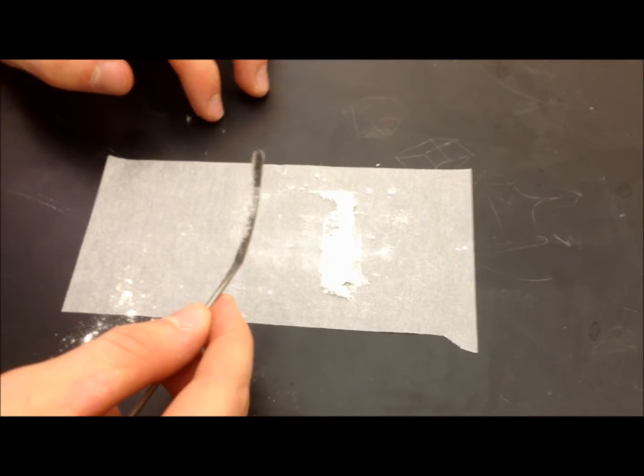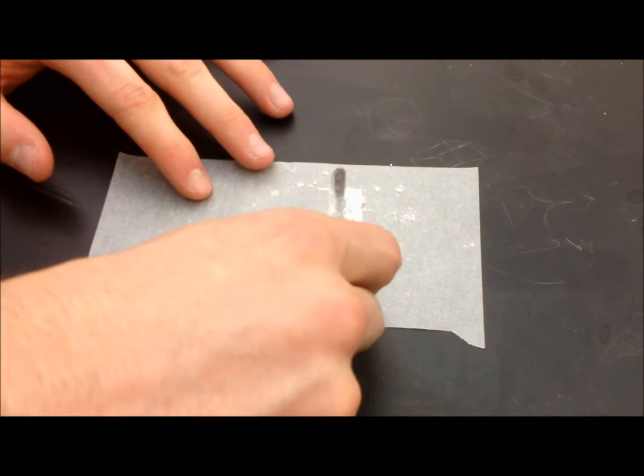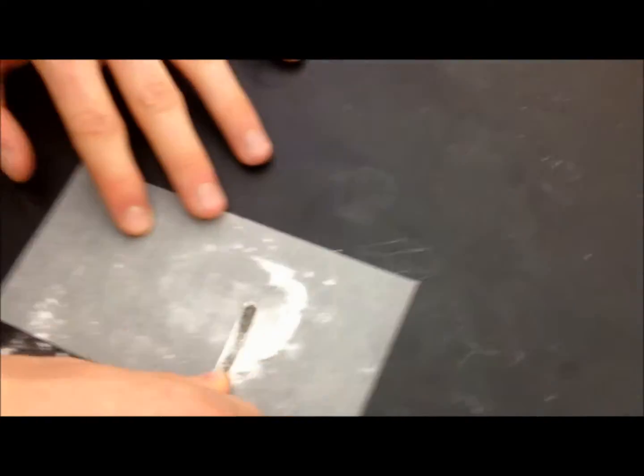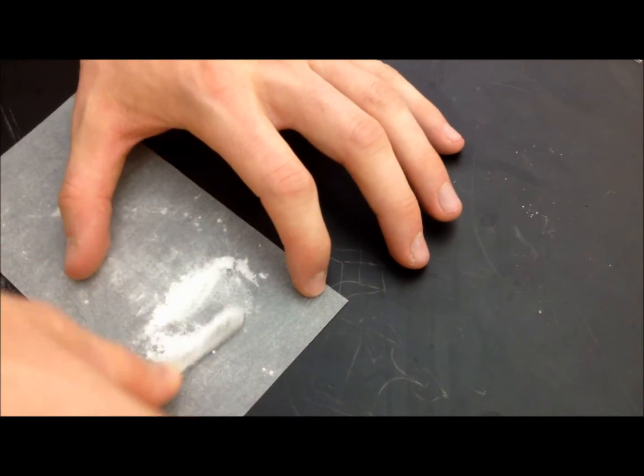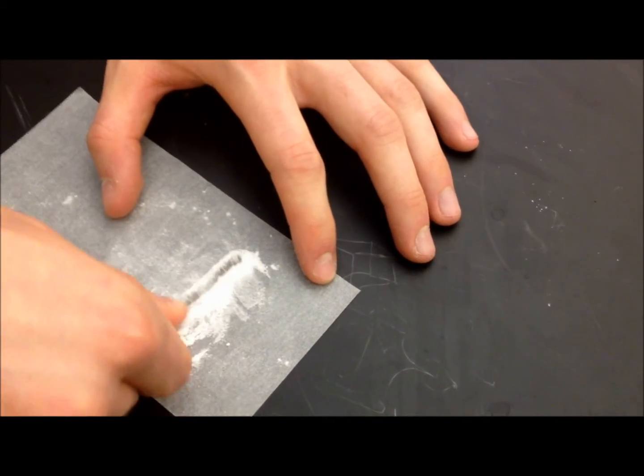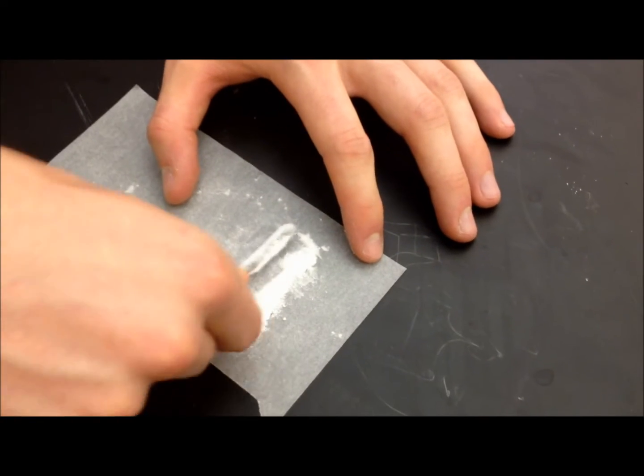The first step you need to do is pulverize your sample. The reason why you do this is to make sure that there's no solvent trapped in between your sample, and that would give you inaccurate results as you're melting your sample by forming bubbles in the capillary tube.